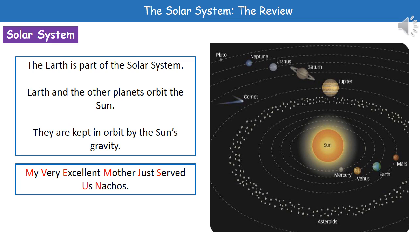Welcome to our review on the solar system. Earth is part of the solar system. Within our solar system we've got the sun, which is the central point, and then we've got a variety of planets that orbit around it. The reason they orbit around the sun is because the sun has this strong force of gravity that keeps them all in their lines.